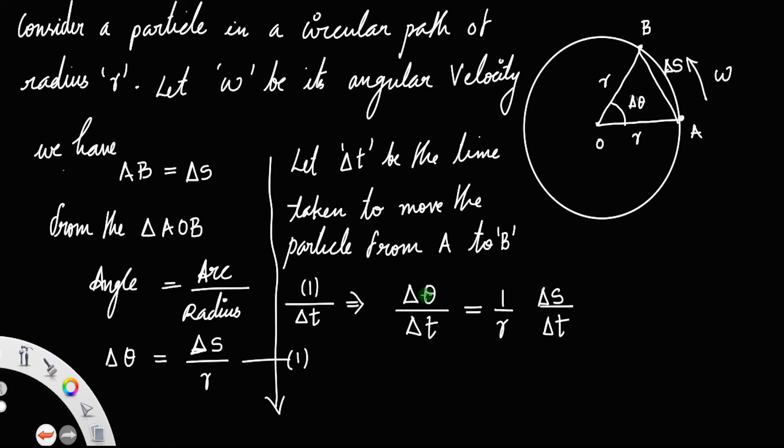Change in angle divided by time is ω, so ω = Δθ/Δt. Therefore, ω = (1/r)(Δs/Δt). The rate of change of displacement is velocity v, so ω = v/r. This is the relation between angular velocity and linear velocity. Alternatively, we can write v = rω.